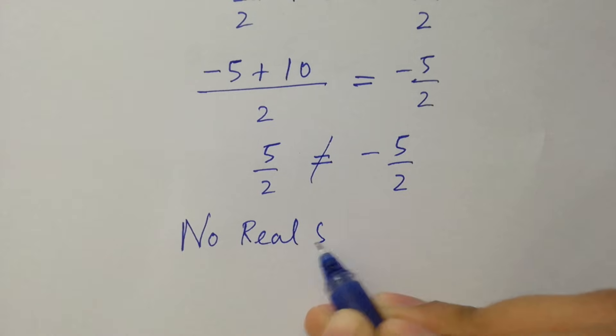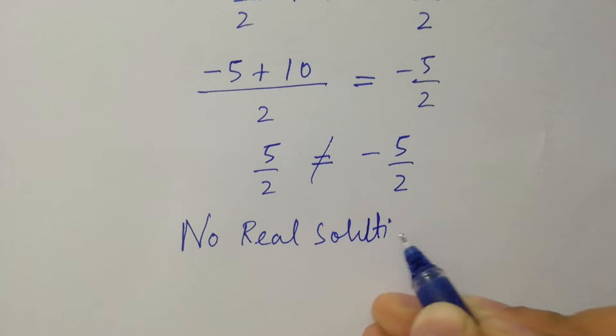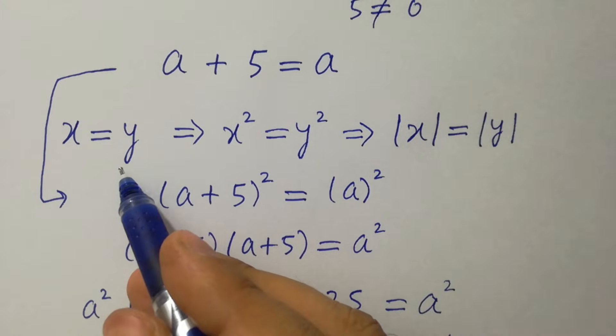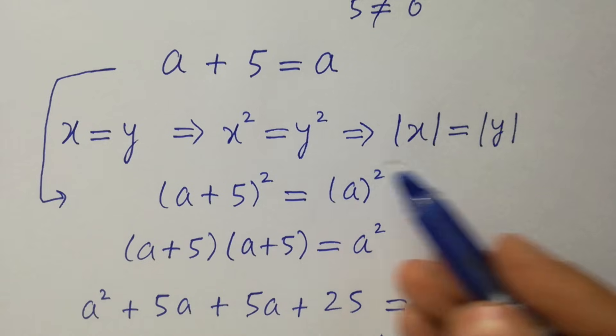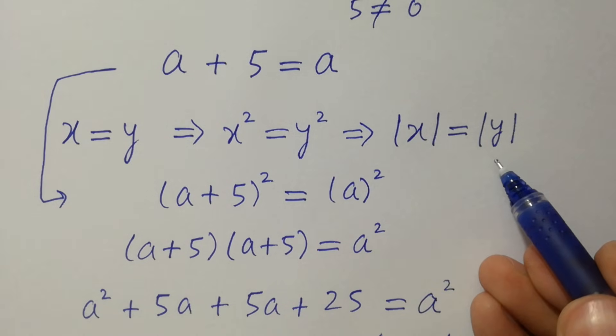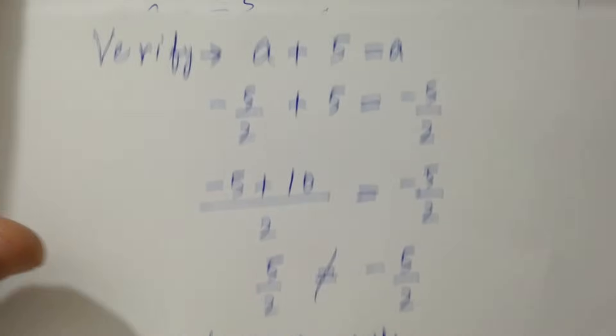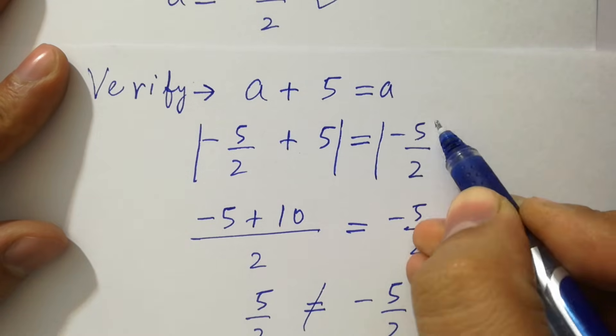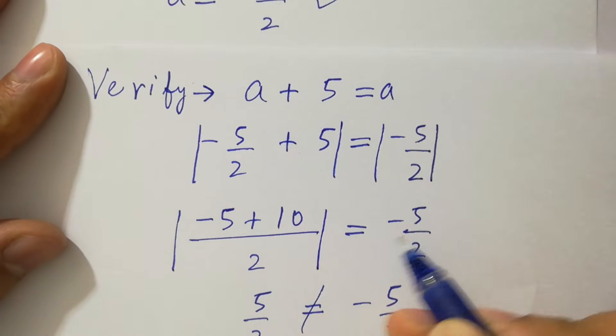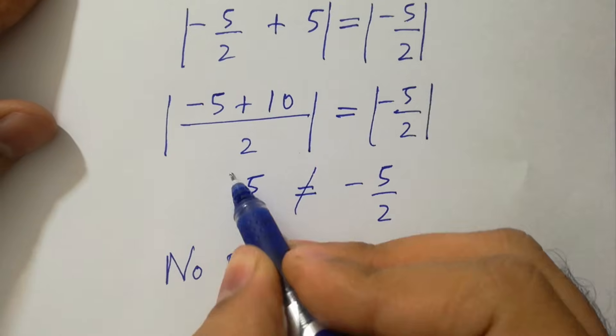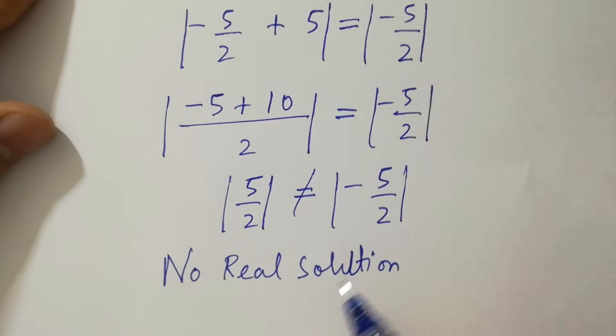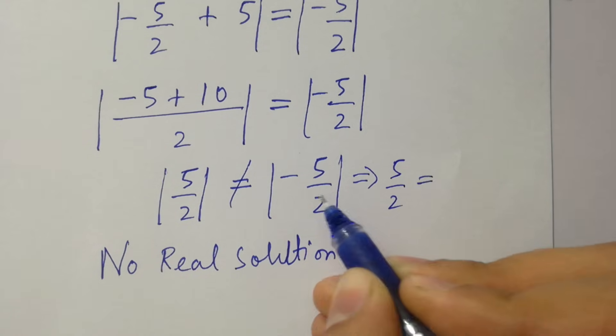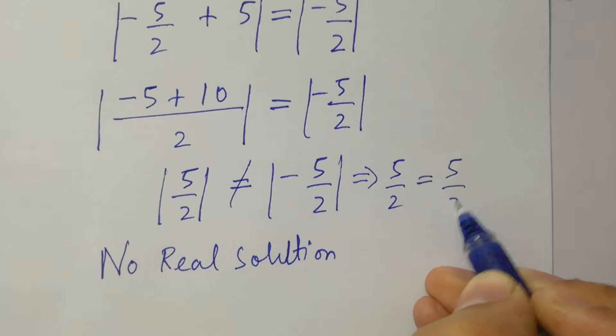But we know that if x equal to y, x square equal to y square, then also absolute value of x equal to absolute value of y. So here if we take absolute value on both sides, then you can see, 5 over 2, equal to, this will be plus value, 5 over 2.